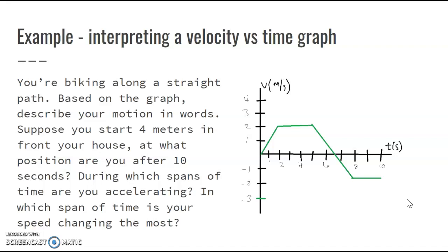Let's move on. Suppose you start at location of four meters in front of your house. At what position are you after 10 seconds? So we want to, we know our initial position. We want to know our final position. So it'd be really convenient if we could determine the displacement, which we can, because we're given a velocity versus time graph, and we know the area of this graph will give us displacement.